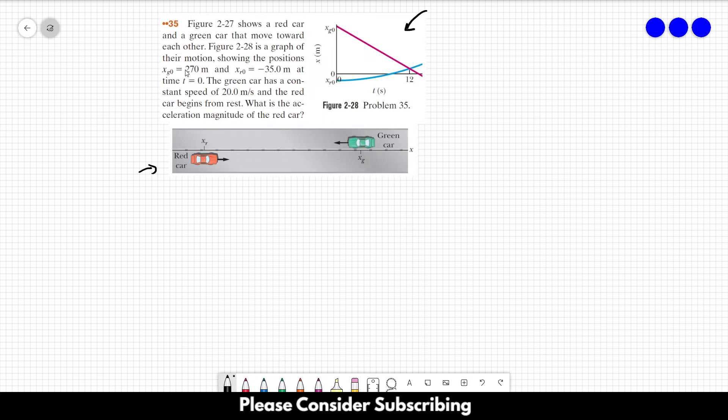XG0 equals 270 meters. So in this graph over here, this value here, which is XG0, equals 270 meters.